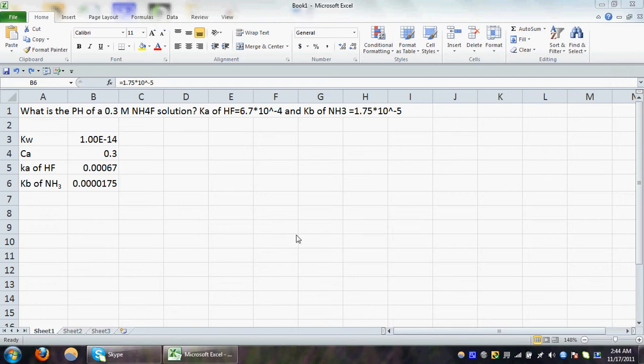Here my problem is to find the pH of a 0.3 molar ammonium fluoride solution. The Ka of HF is given and the Kb of ammonia is given. To begin the problem, we have to fix the values.